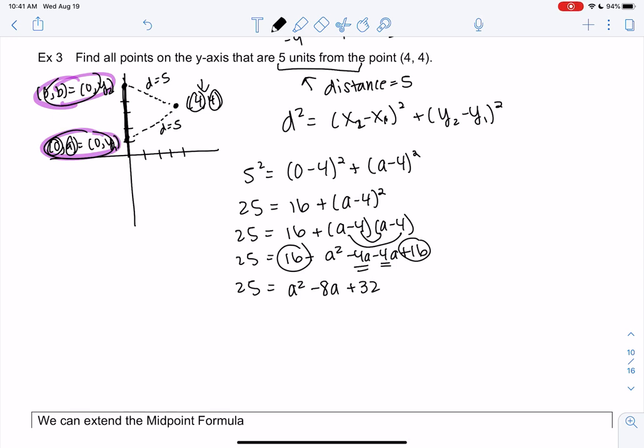So we'll get 25 = a² - 8a + 32. So it looks like we're getting a quadratic, so I'm going to go ahead and set it equal to 0 so we can factor and solve. So we get 0 = a² - 8a, and then 32 - 25 would be 7.